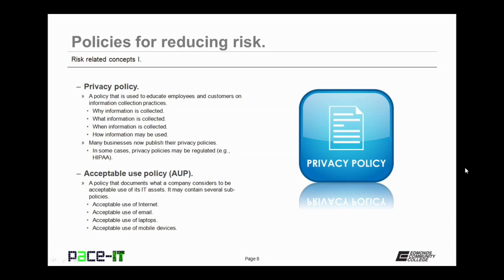Many businesses now publish their privacy policies, and in some cases privacy policies may be regulated. Then there is the acceptable use policy, or AUP. It's a policy that documents what a company considers to be acceptable use of its IT assets. It may contain several sub-policies within the general AUP, and should cover acceptable use of the internet, email, company laptops, and mobile devices.